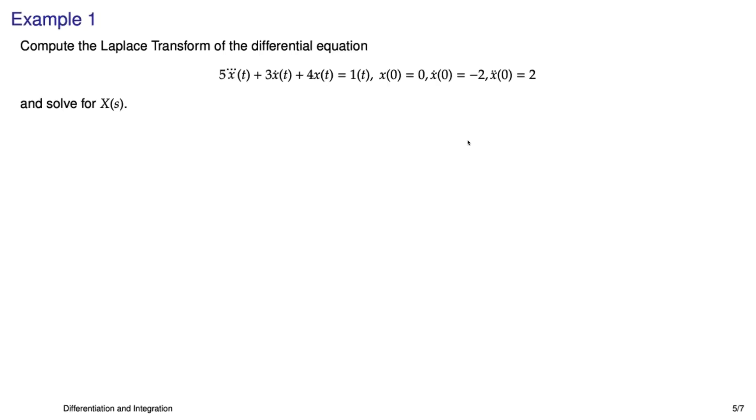So here's our first example. What we're going to do is take the Laplace transform of this differential equation. It's a third-order differential equation. And the input, or the right-hand side, is a unit step. And we have three initial conditions, which makes sense because it's a third-order differential equation. So the first thing we do is look at that x triple dot term and take its Laplace transform. So we have s cubed times capital X, minus those three terms that make up the initial condition sequence. And then we do the same thing for the next term. So three times the quantity s times capital X, minus an initial condition. And then we do one more for the four times x(t), that just becomes a capital X. And the unit step is 1 over s.